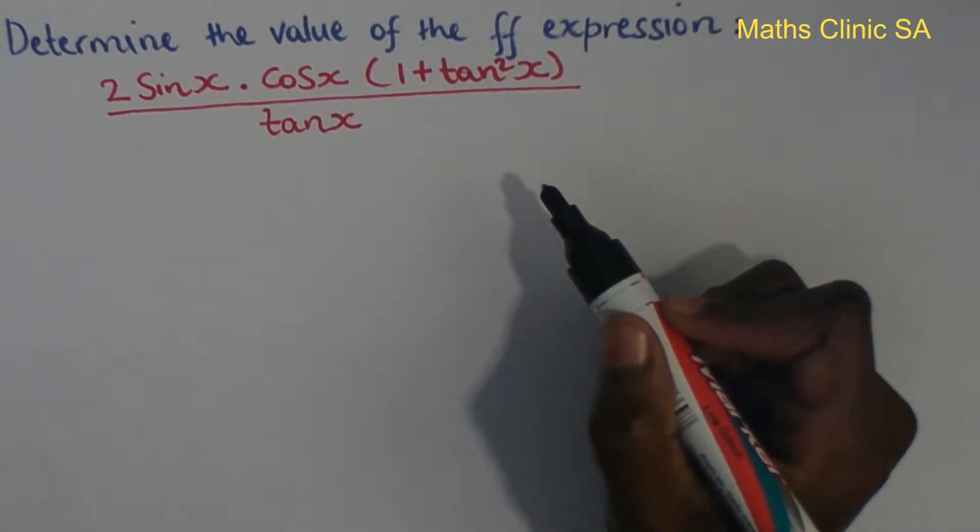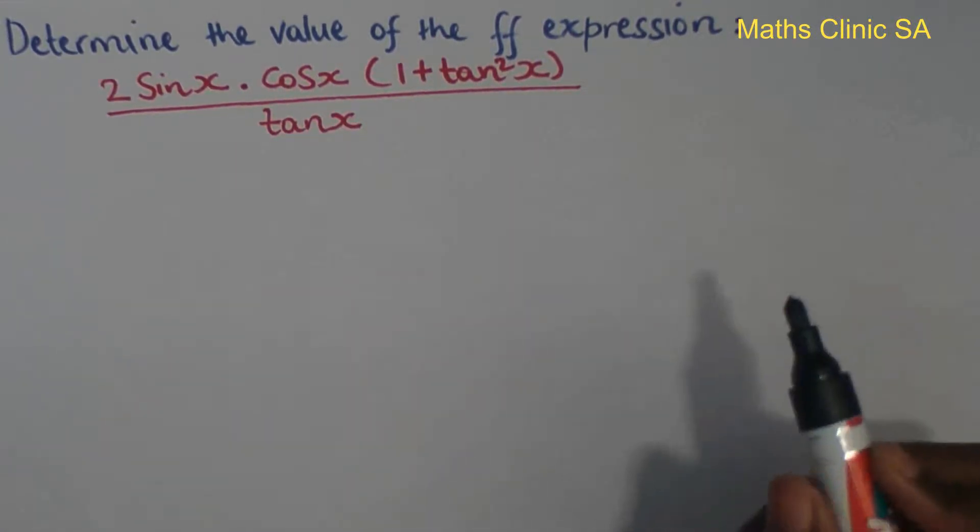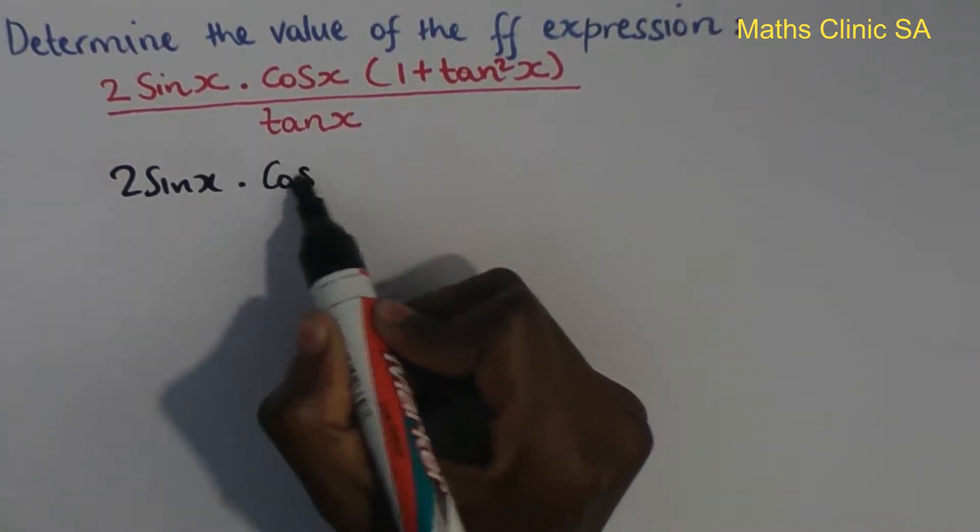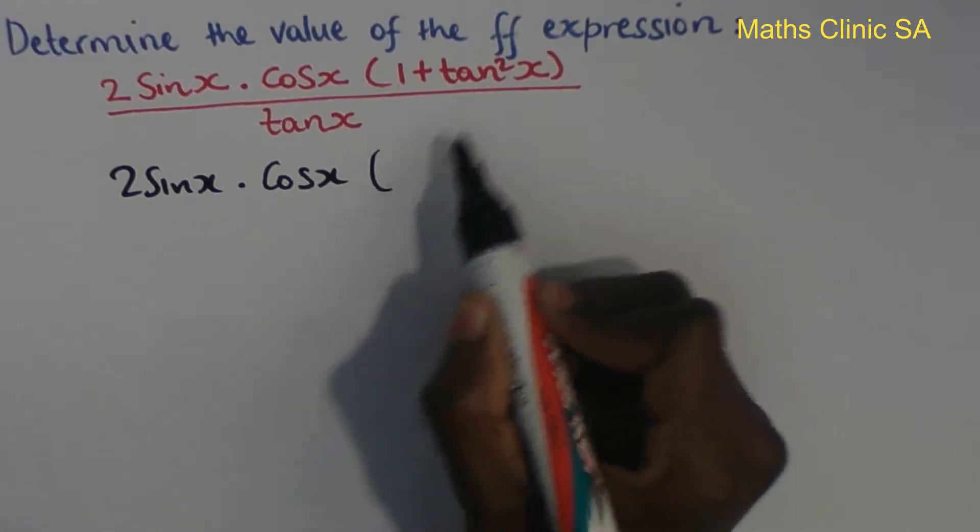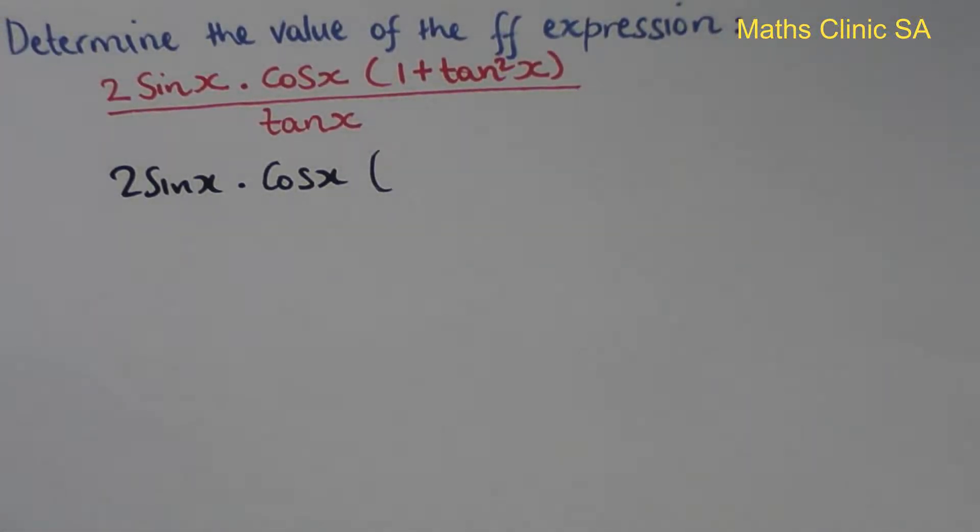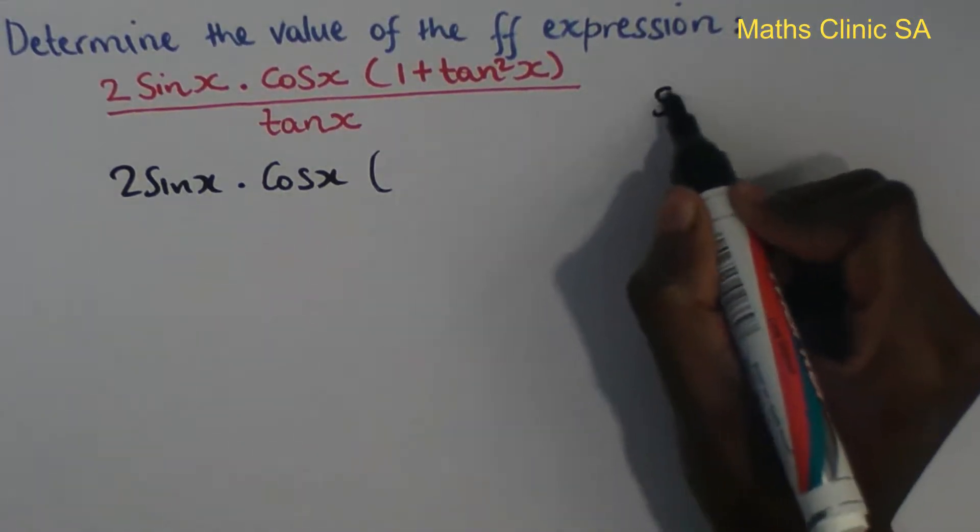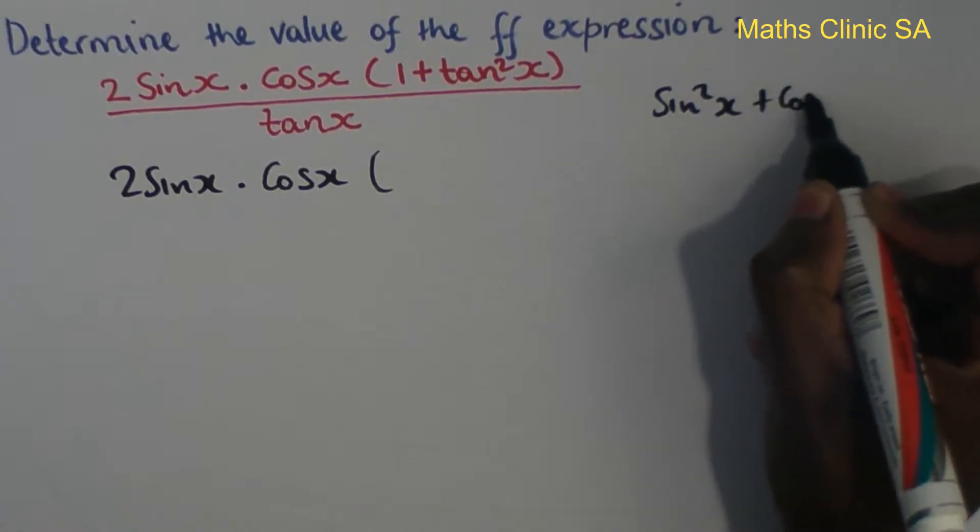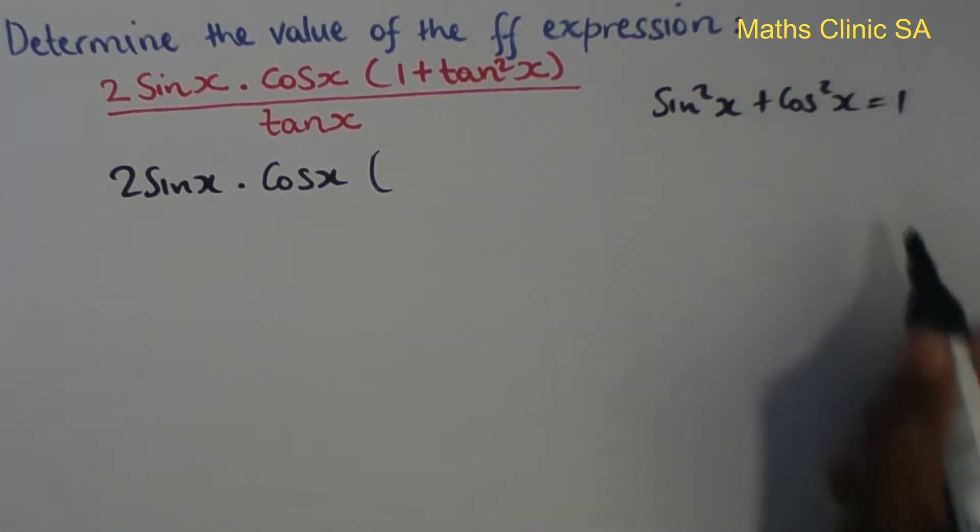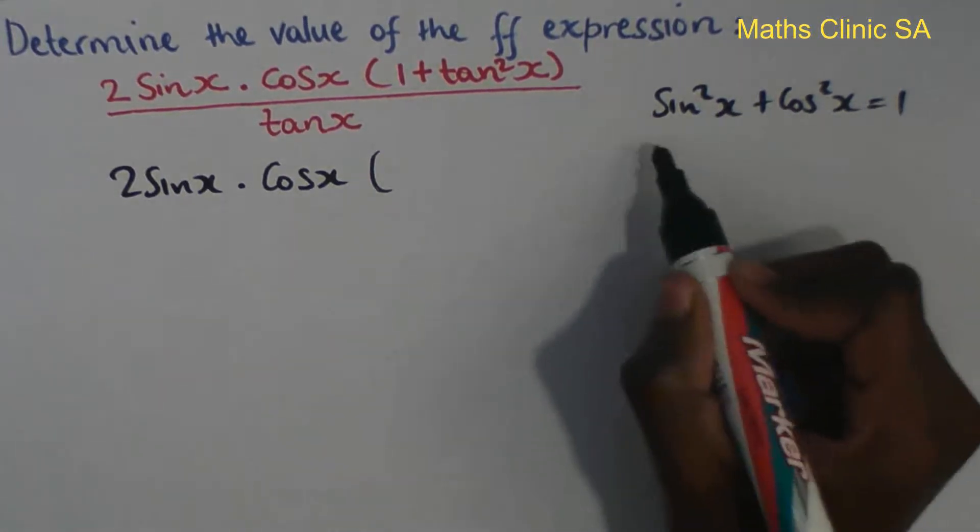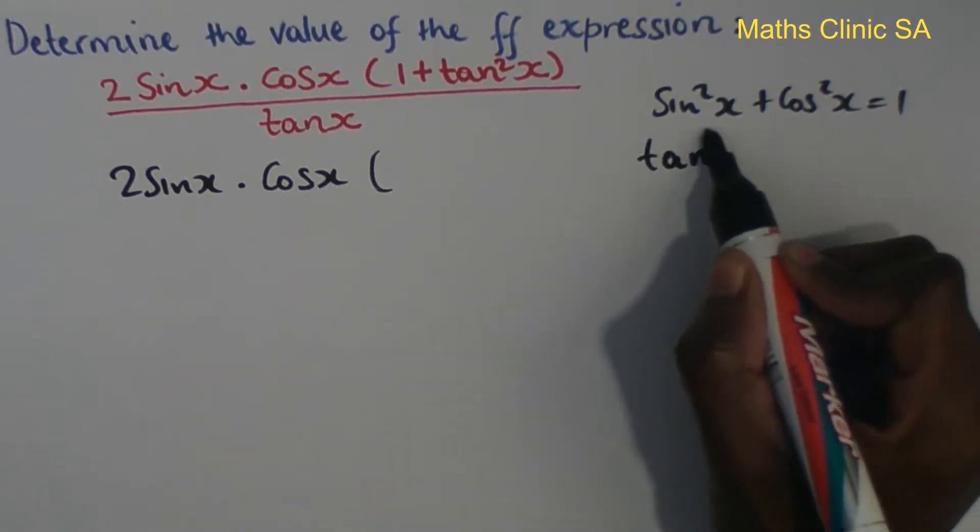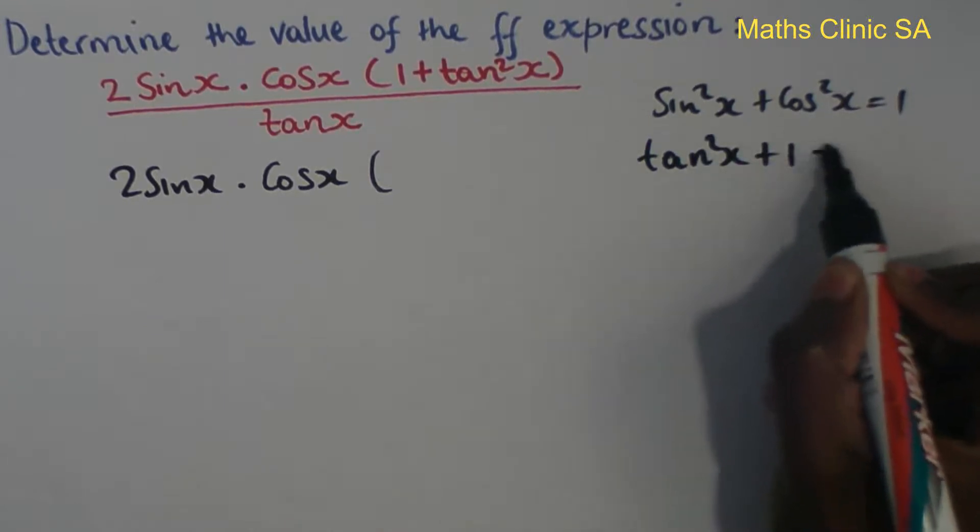So we have 2 sine x times cos x in brackets, one plus tan squared x. Now the Pythagorean identity is sine squared x plus cos squared x equals one. So we know one is, we know tan squared x plus one equals...